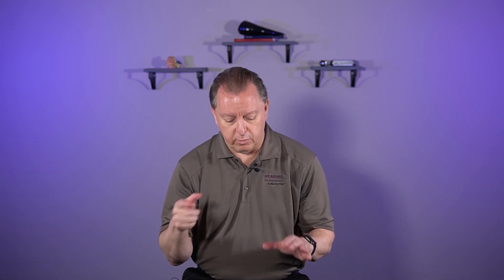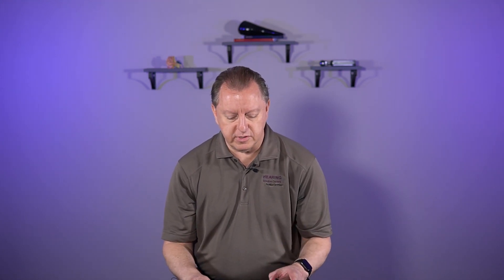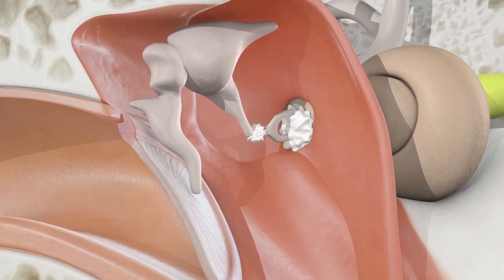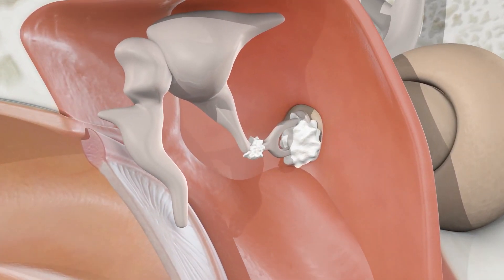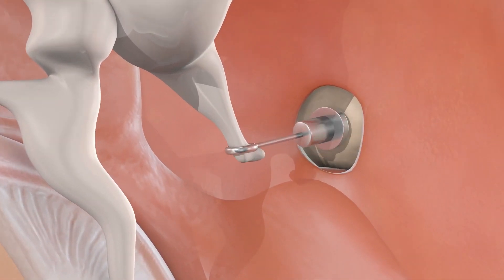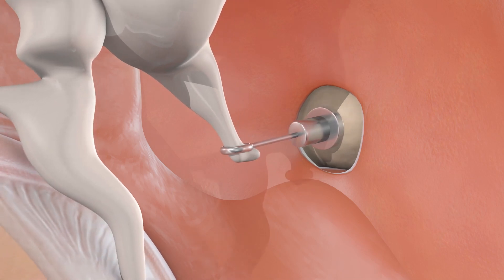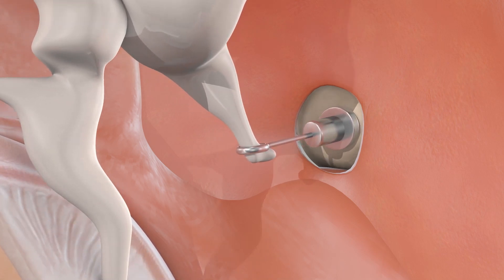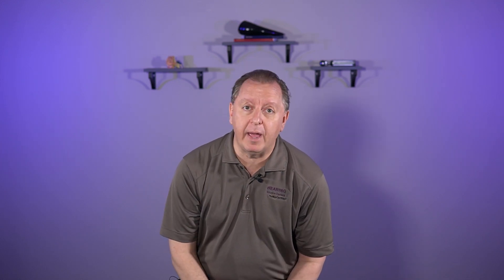If the bone growth gets really bad, we call it cochlear otosclerosis, which means the sclerosis or bone growth goes into the inner ear and starts damaging the cells in the inner ear. That's a really bad thing, and we see it quite a bit with some people who have long-term otosclerosis. The audiologist will probably get involved and potentially recommend hearing aids at that point.